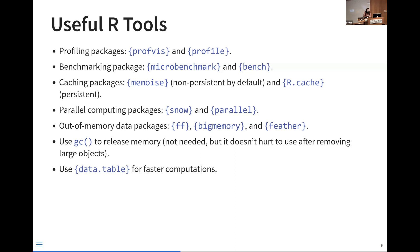For parallel computing, packages like Snow and Parallel allow you to use those additional cores. For out-of-memory data, packages like FF, BigMemory, and Feather are useful when working with extremely large data that doesn't fit in RAM — they store data on disk for you to use. I also included Garbage Collect, a base function that releases unused memory. Technically R runs this periodically, but it's extremely useful to call whenever you've removed a large object. And of course, Data Table allows for faster computations.